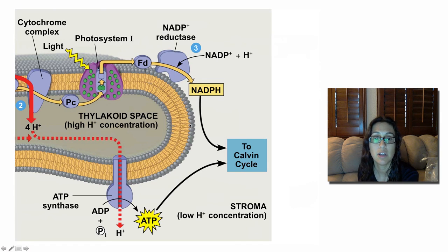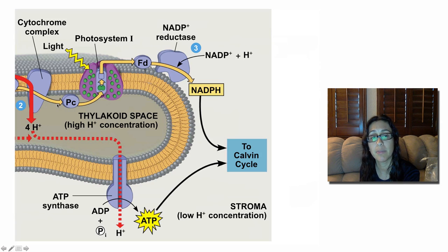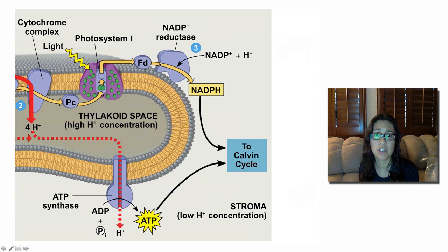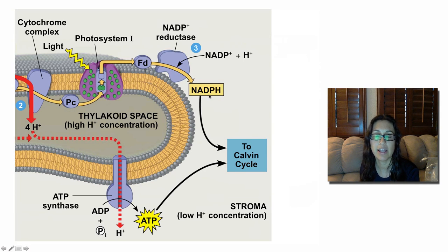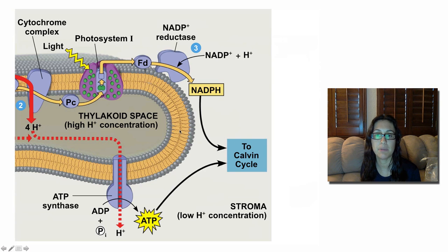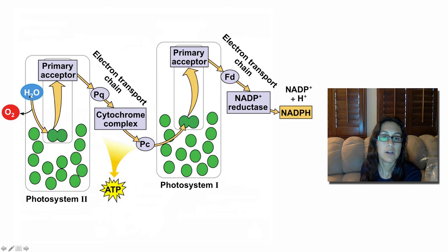Zooming in on the second portion: light energy is absorbed, passed along, and electrons are donated from the P700 chlorophyll A molecules. Those electrons are replaced by the electrons coming from photosystem II. The electrons move down the second electron transport chain to the NADP+ reductase, which puts the electrons plus the hydrogen ion onto NADP+, making our NADPH. Both the NADPH and the ATP will then be used in the Calvin cycle — we've converted solar energy into chemical energy now stored in ATP and NADPH.